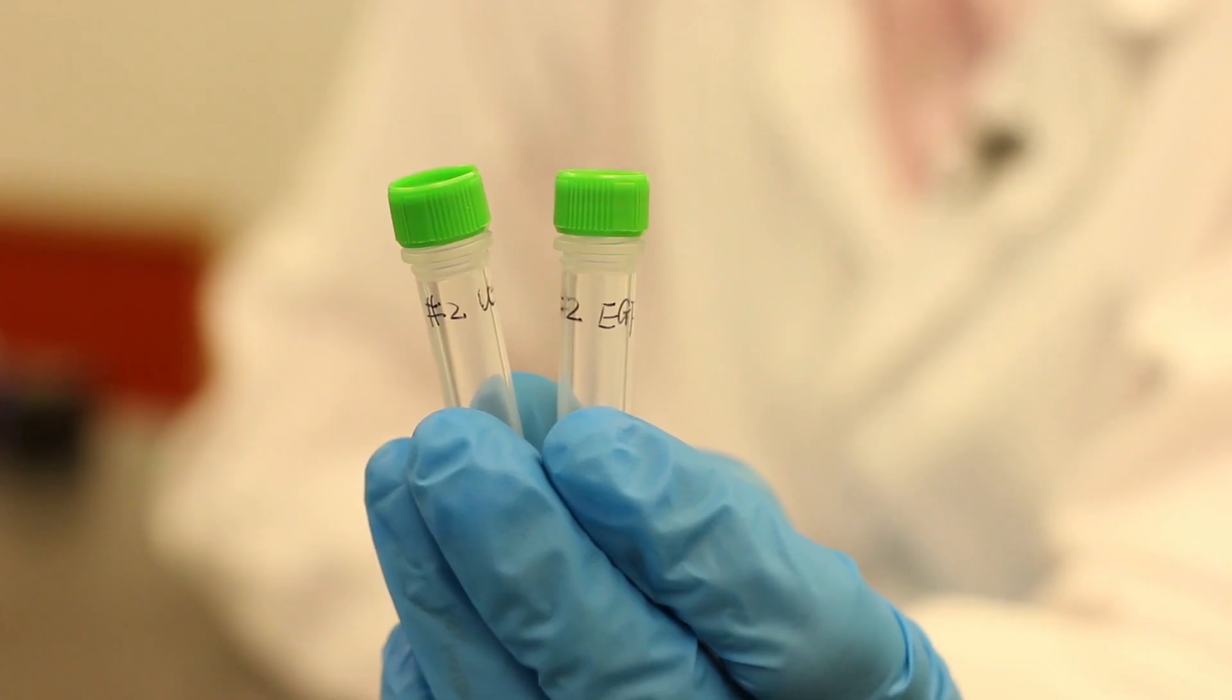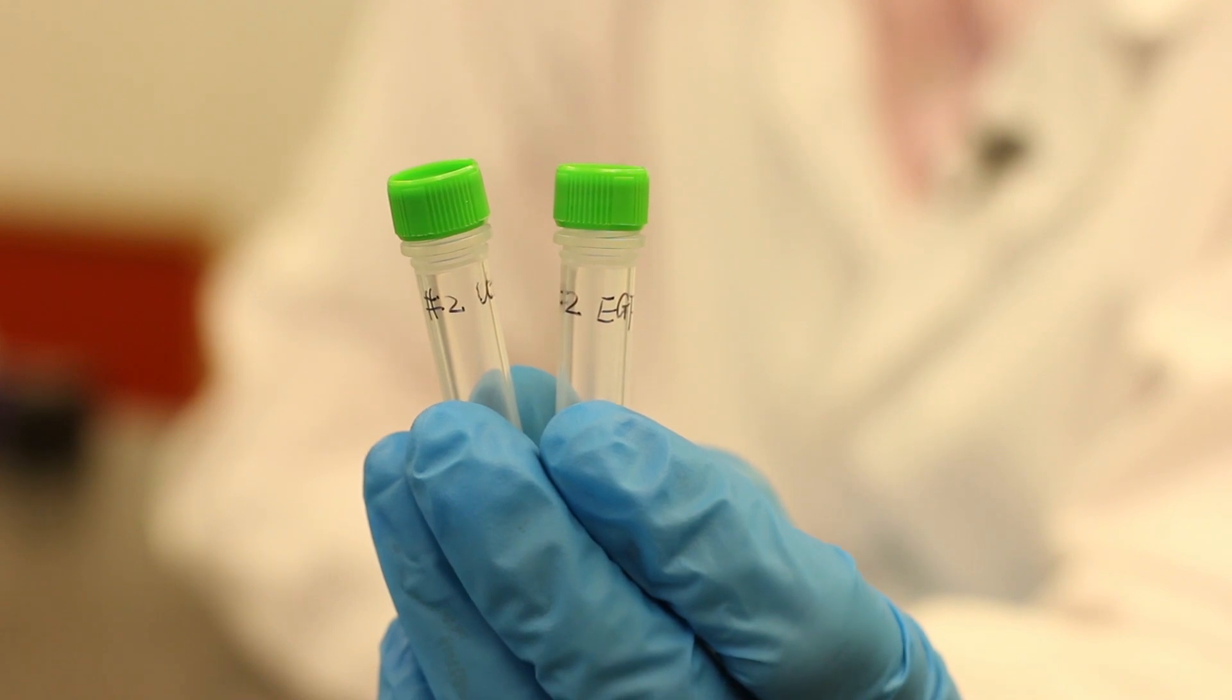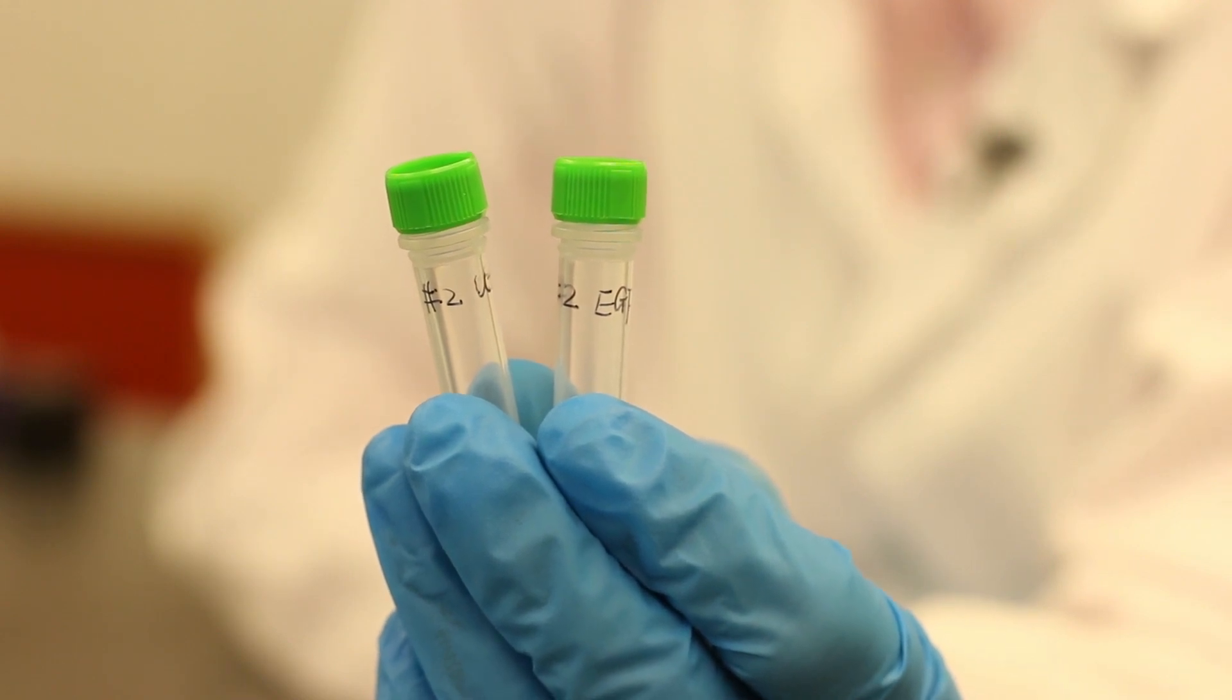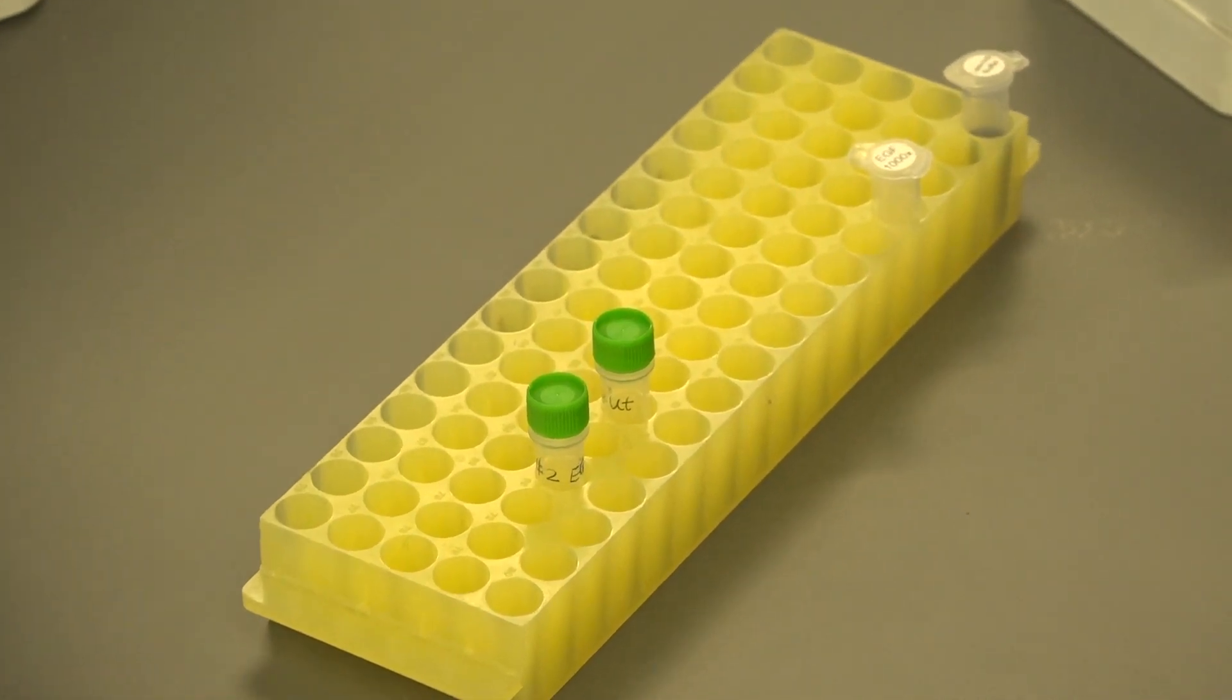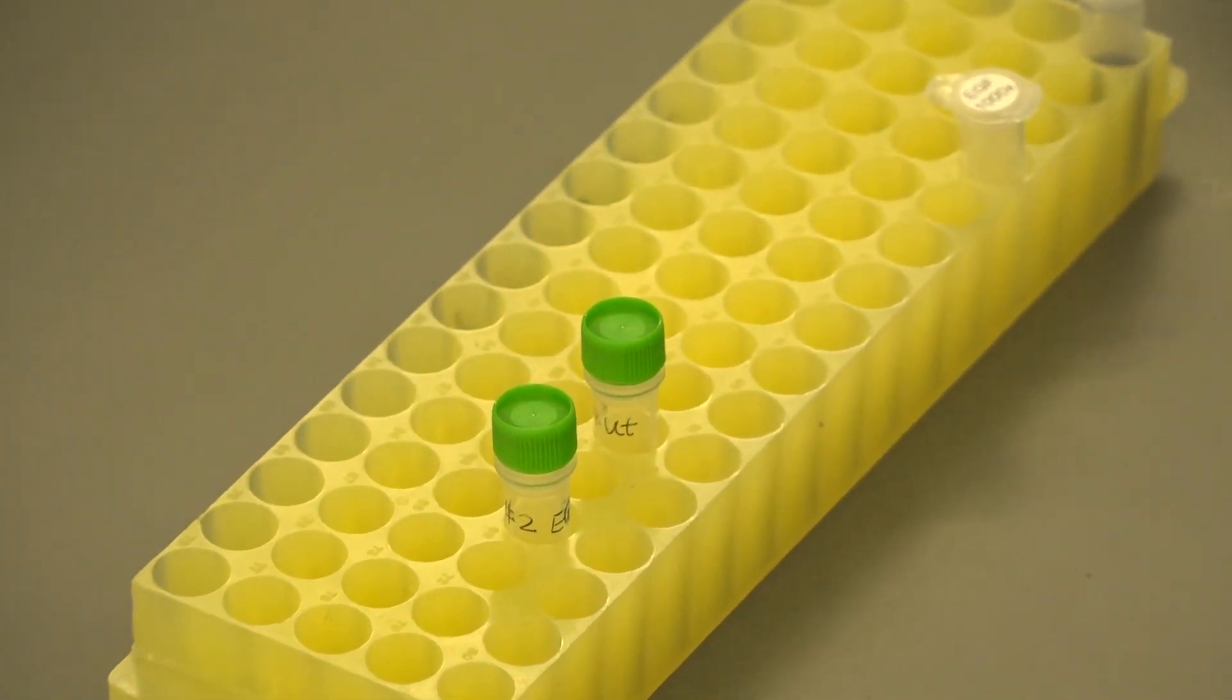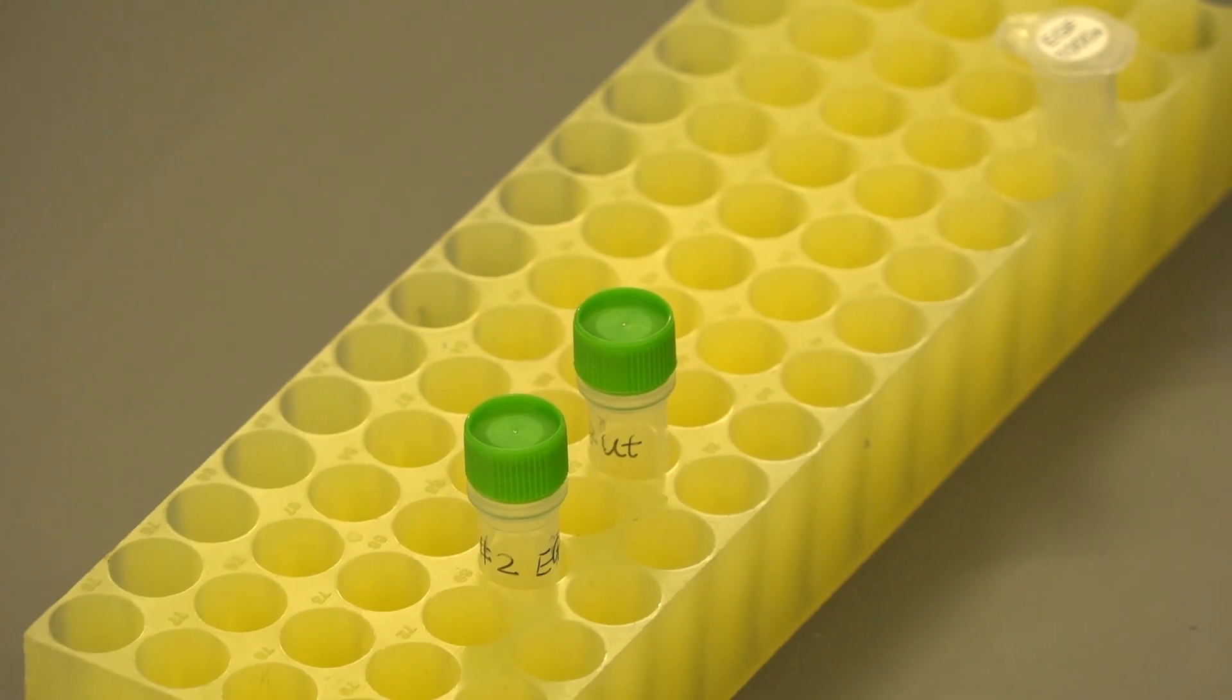While the cells are incubating, label two 2-milliliter screw top microfuge tubes the same way as you label the culture dishes. These tubes will be used to collect cell suspensions and lyse the cells later.